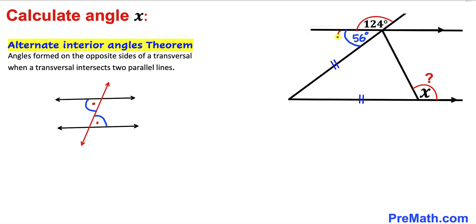Therefore, in our case, this angle and this angle are alternate interior angles. If this angle is 56 degrees, this angle has to be 56 degrees as well.